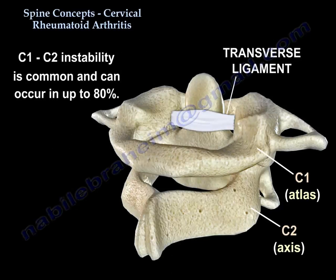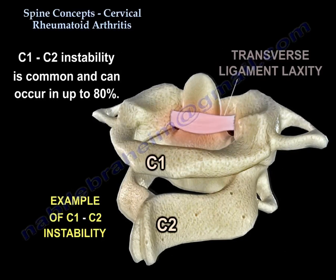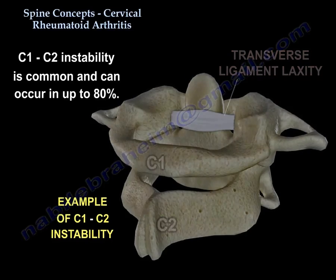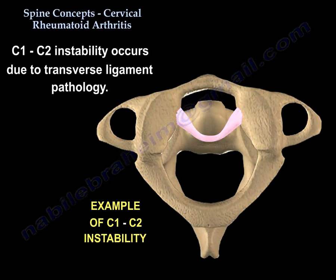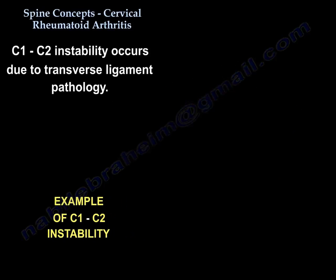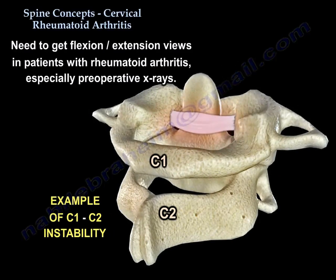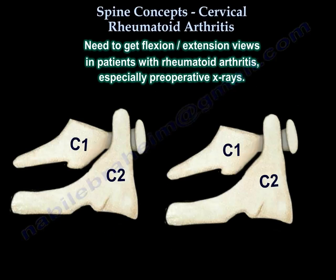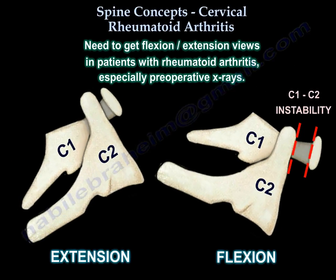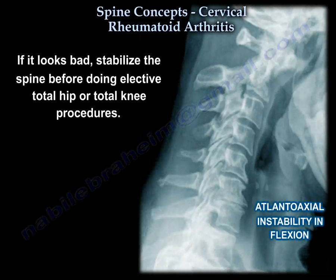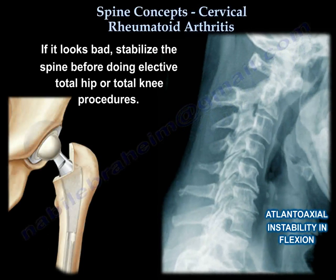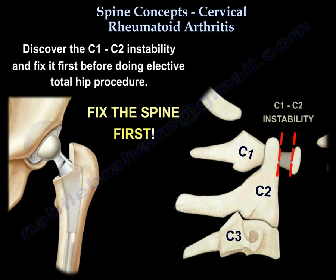C1-C2 instability is common, occurring in up to 80% of patients. It occurs due to transverse ligament pathology, so flexion-extension views are needed in patients with rheumatoid arthritis, especially preoperative x-rays. If instability is found, you must stabilize the spine before performing elective total hip or total knee surgery — discover C1-C2 instability and fix it first.